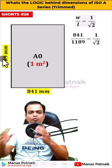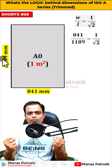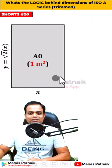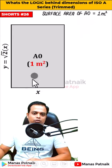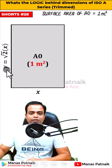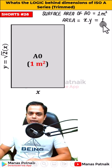841 mm and 1189 mm - where do we get these dimensions from? Well, the secret lies inside this area of one meter square. So width is x, length is y. x into y will give the area as one meter square.